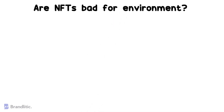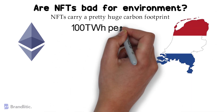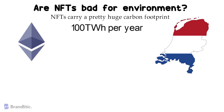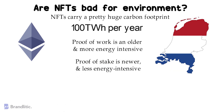Next: are NFTs bad for the environment? A large number of NFTs carry a pretty huge carbon footprint. To talk about Ethereum alone, it uses more energy than the Netherlands, which is over 100 terawatt hours per year. So yes, NFTs are causing harm to the environment. But Ethereum is working to solve this. Proof of Work and Proof of Stake are the two ways a blockchain transaction can be verified. While Proof of Work is older and more energy intensive, Proof of Stake is newer and less energy intensive, and is the option most cryptocurrencies are moving to, including Ethereum with the launch of Ethereum 2.0.